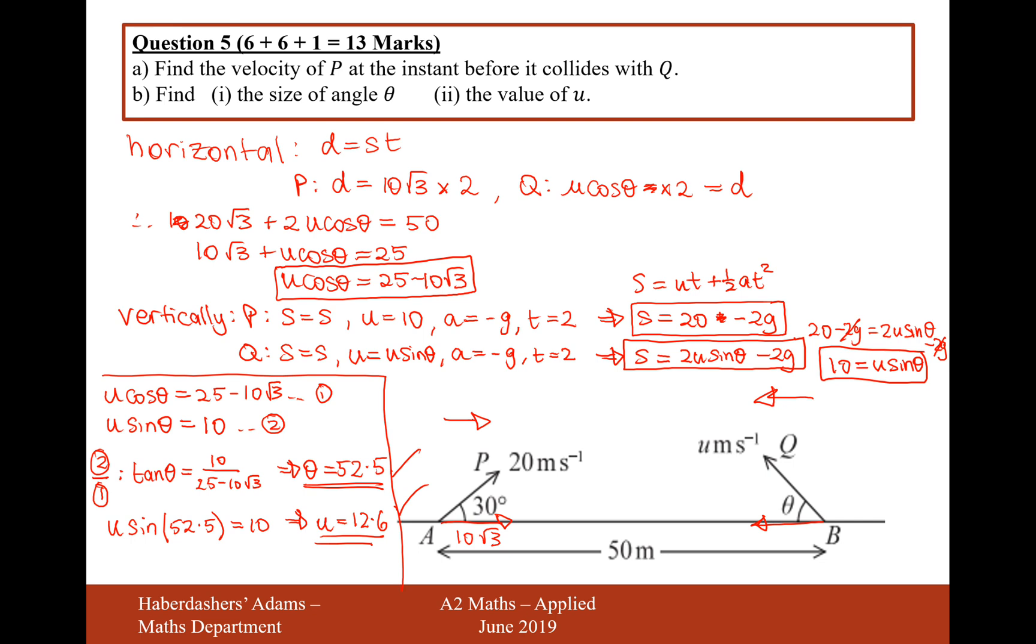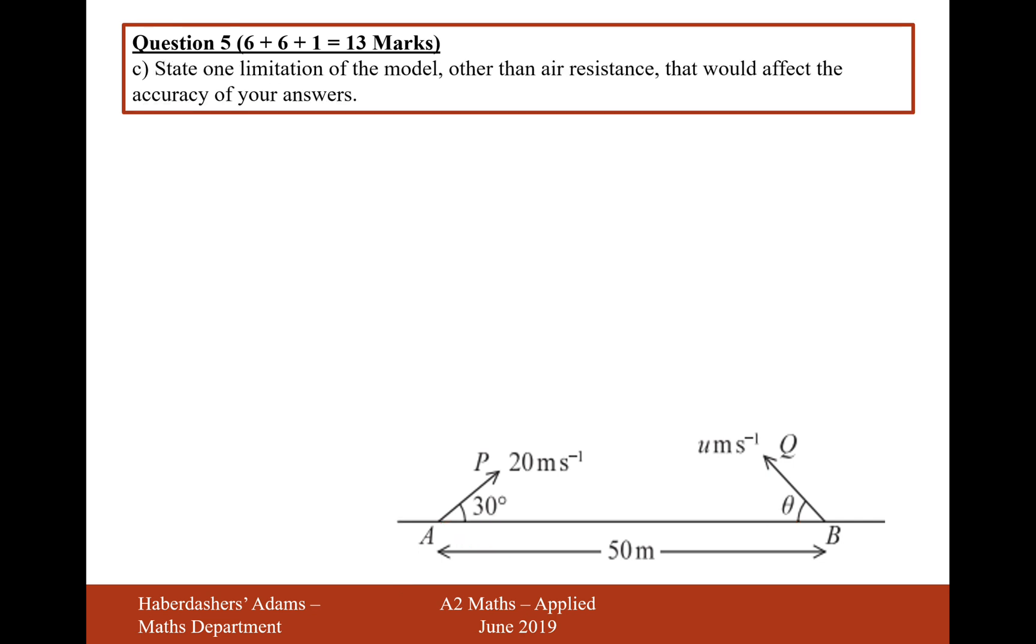And let's move on to part c now. A sneaky one marker at the end there. State's one limitation of this model other than air resistance that would affect the accuracy of your answers. Well, the direction of the wind would be important there. The effect of any spin on the ball would be important there. And the size of both of the balls would be important as well. So any one of those options there would be fine for you to say the direction of wind, wind, the effect of wind, spinning of the ball, and size of the balls are all fine in that last part c question.